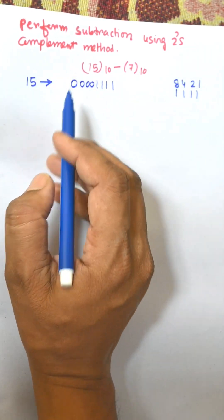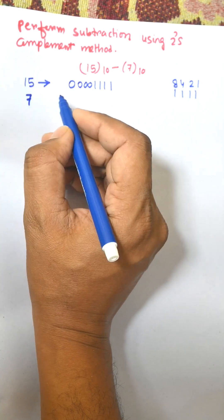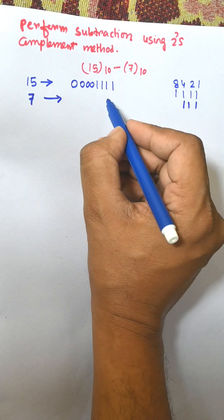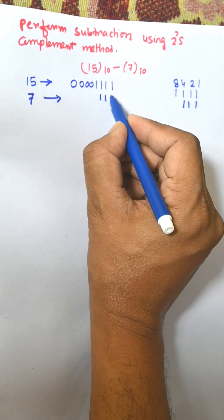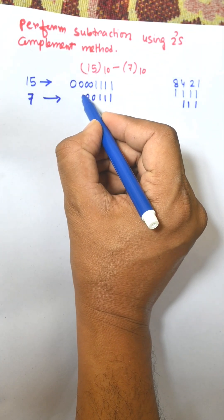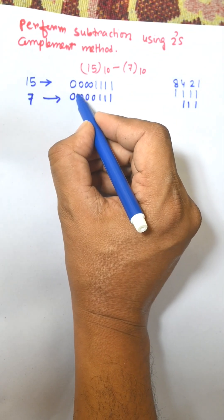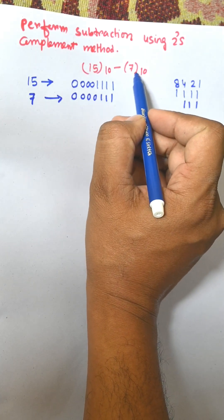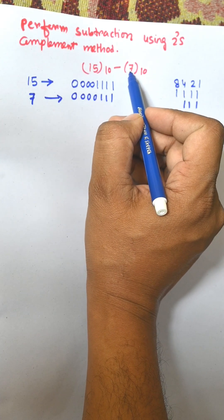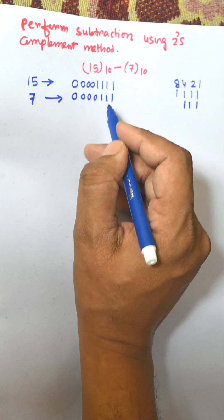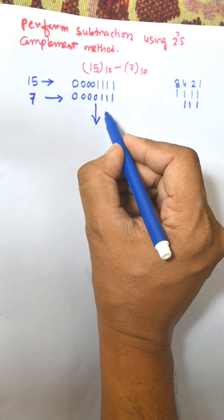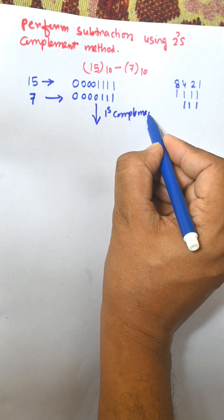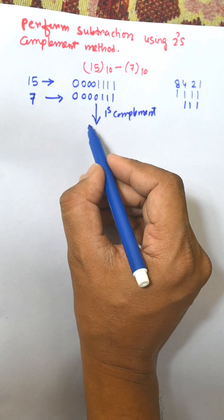Now, 7 is a positive number, so the binary of 7 is 4 plus 2 plus 1, meaning 0 0 0 0 0 1 1 1 — remaining bits are all 0, and this is the sign bit. However, since 7 is being subtracted, it is treated as a negative number, so we need to perform the 1's complement of 7 to represent it as negative.